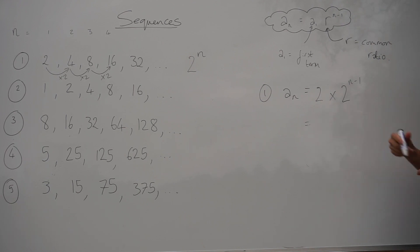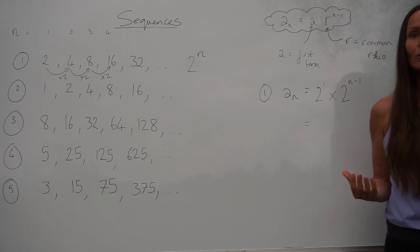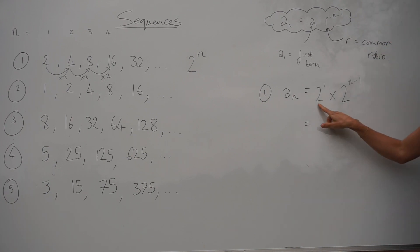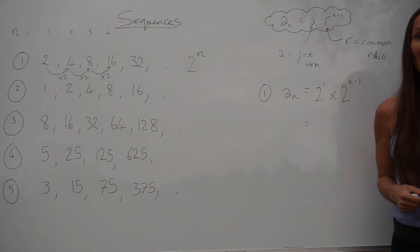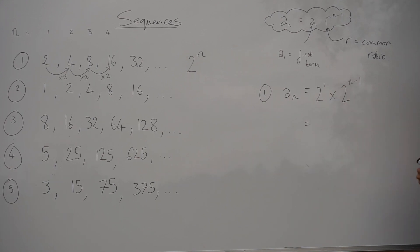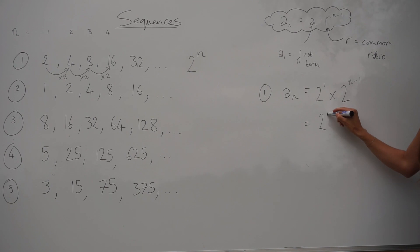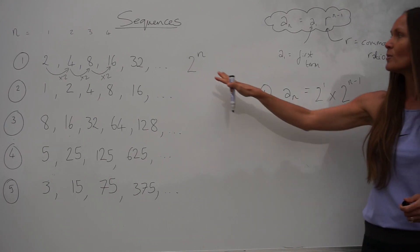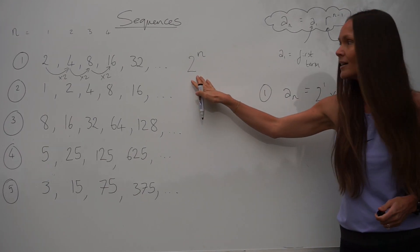2 is the same as 2 to the power of 1. And when you're multiplying two numbers together that are the same, you need to add their powers. So if I add 1 and n minus 1, it simplifies to 2 to the power of n, which is the nth term we worked out earlier.